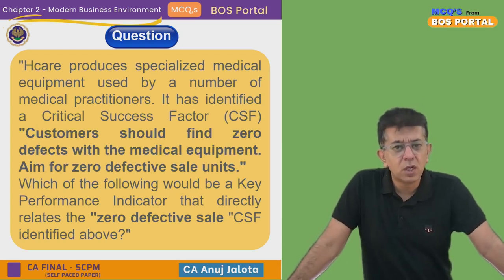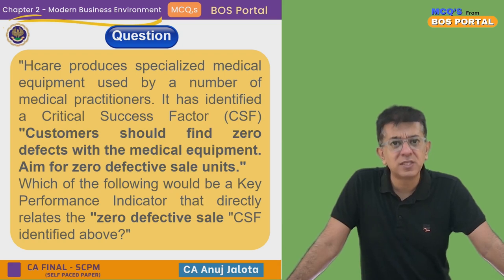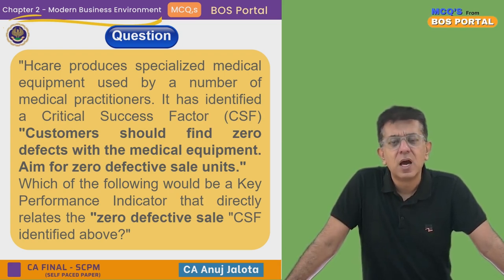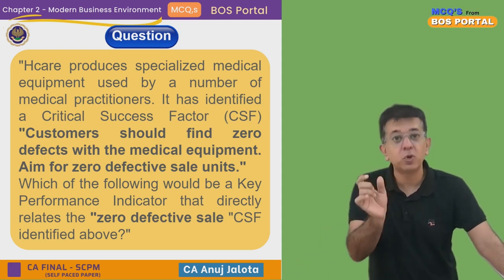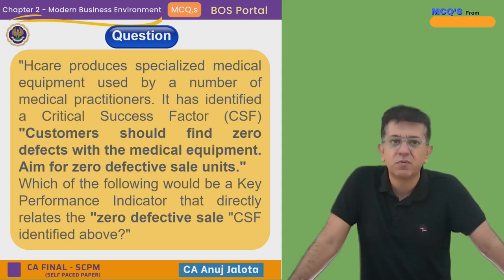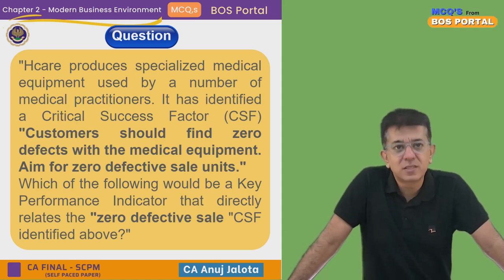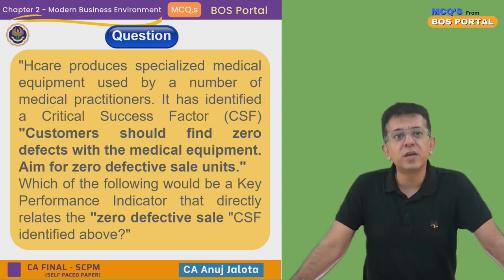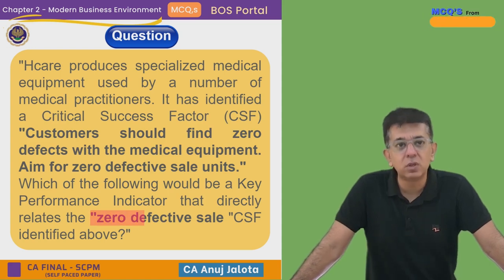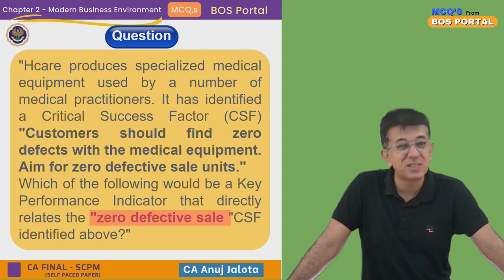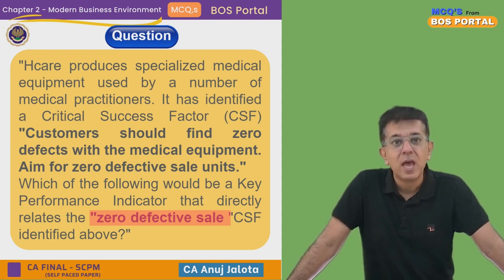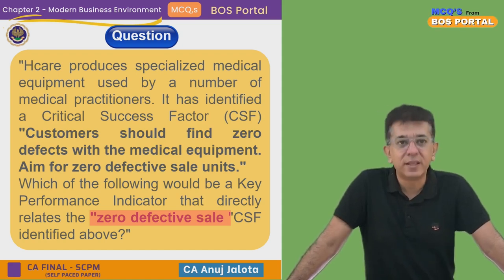So your CSF is what you wish to achieve, and your KPIs are the data points you measure to know whether you will achieve your objective or not. In this case, we are aiming for zero defective sale units, meaning there should not be any defective units sold to the customer. The question is: what will indicate whether we are achieving that? Let's look at the four options.